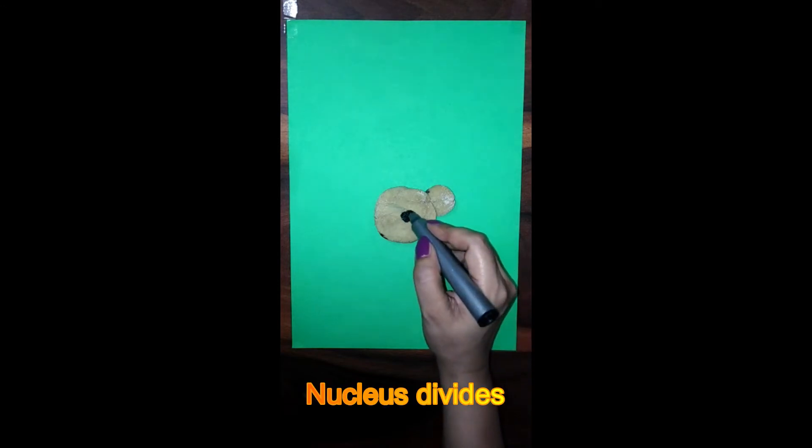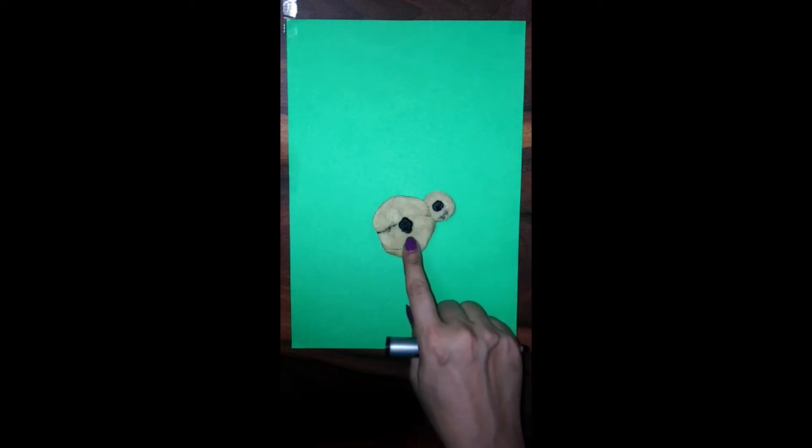After this, the nucleus will start elongating. As a result of this division, the nucleus will divide into two daughter nuclei. One of the nucleus will stay in the parent cell and the other nucleus will move into the bud.